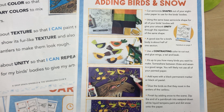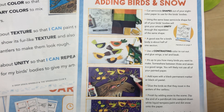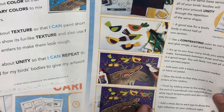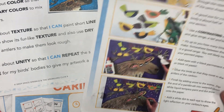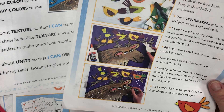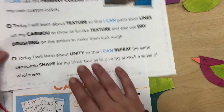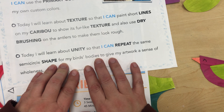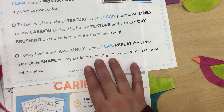Today we're going to do the final steps of adding the birds to your antlers and then adding the snow. I'm going to use a q-tip, but you could also use the end of a brush for the snow as well. Our I can statement says: today I will learn about unity so that I can repeat the same semicircle shape for my birds' bodies to give my artwork the sense of wholeness.